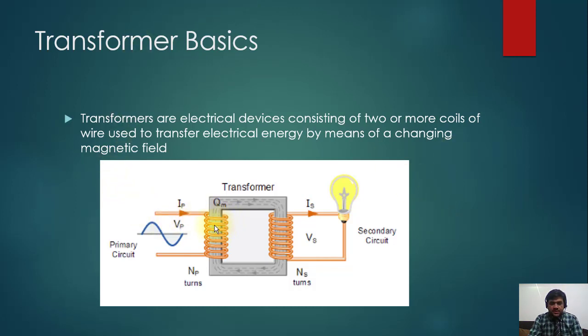This is coil number one, this is coil number two. This is a load which is basically a bulb. Here you can see an alternating source which is a generator. IP is the primary current, VP is the primary voltage, and NP is the number of turns. IS is the secondary current, VS is the secondary voltage, and NS is the secondary turns.